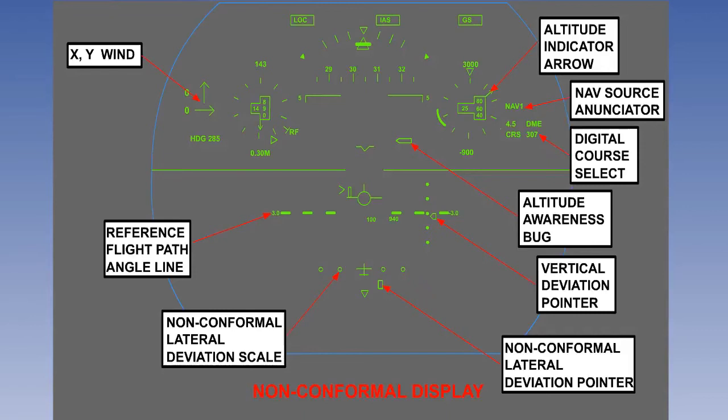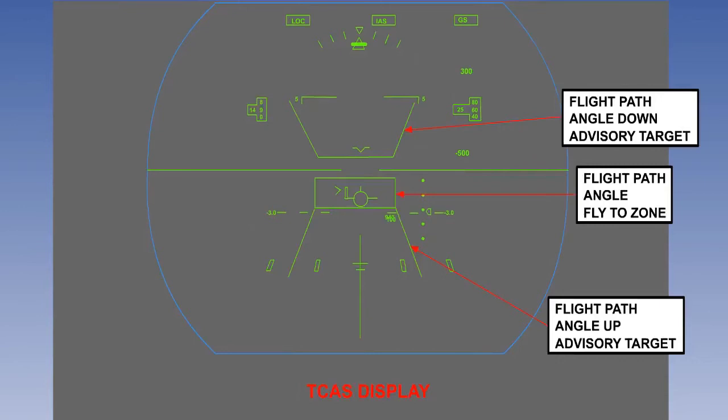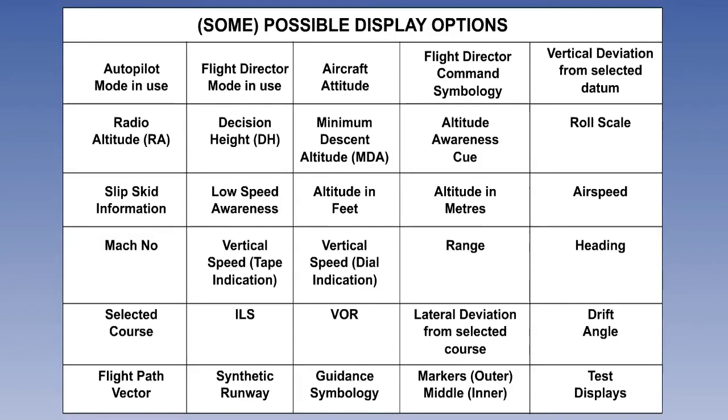A traffic alert and collision avoidance system or TCAS can also be selected. Basically, just about any information generated within the aircraft can be displayed if the customer requires it.